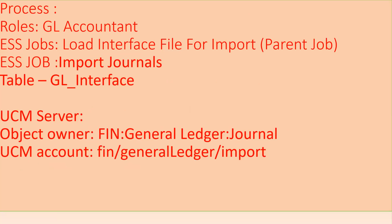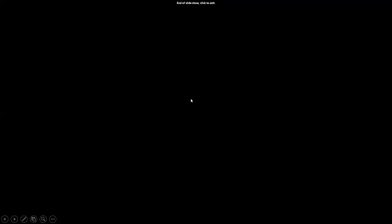There is a parent job called Load Interface File for Import. When you run this program, two additional child jobs get triggered automatically — one extracts data from the UCM server and keeps it in the interface table, and the final job is Import Journals, which moves data from the interface table to the base tables. The UCM account name required is fin_journal_ledger_journals. Without this account you cannot import the data, as it determines where and how the data is imported. The import process name is fin_general_ledger_import.